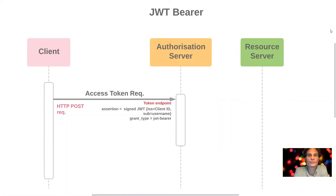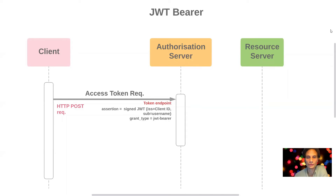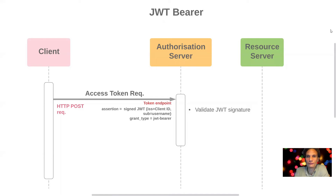The flow starts with the client making a request for an access token via an HTTP POST request — an out-of-band post request from the client server made to the token endpoint. For the JWT Bearer flow, there's an assertion parameter set to the signed JWT. This payload has three elements: a header containing information about the signing algorithm, the JWT body itself, and the signature — all separated by periods. The grant type is specified as JWT Bearer.